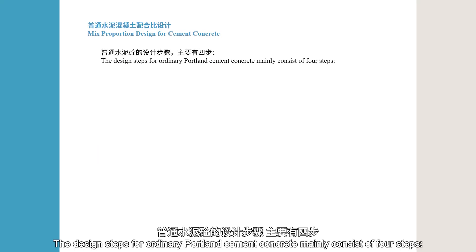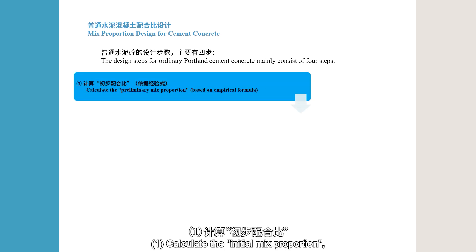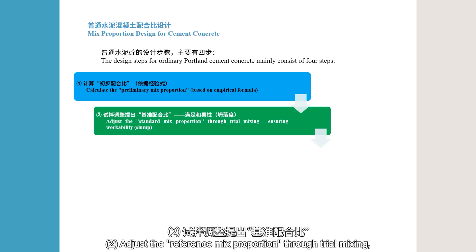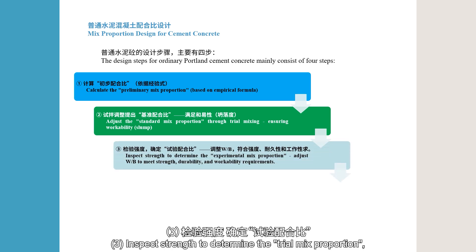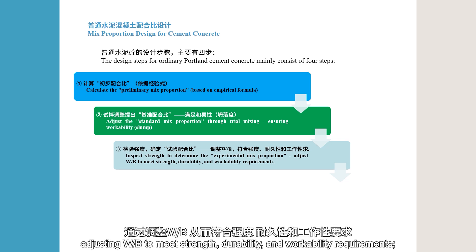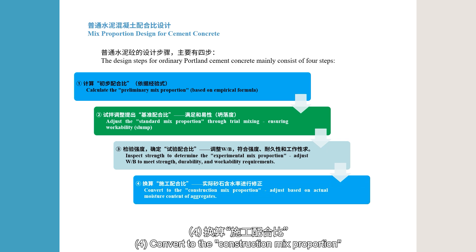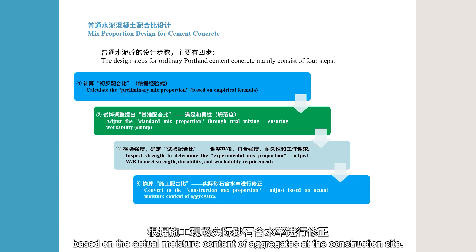The design steps for ordinary Portland cement concrete mainly consist of four steps. 1. Calculate the initial mix proportion, mainly based on empirical formulas. 2. Adjust the reference mix proportion through trial mixing, ensuring the workability of concrete, determined by slump or VB consistency tests. 3. Inspect strength to determine the trial mix proportion, adjusting W/B to meet strength, durability, and workability requirements. 4. Convert the construction mix proportion, based on the actual moisture content of aggregates at the construction site.